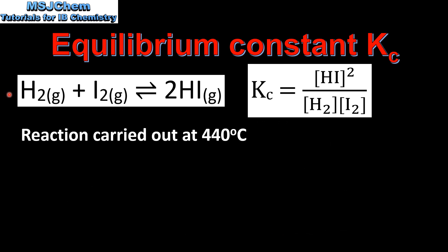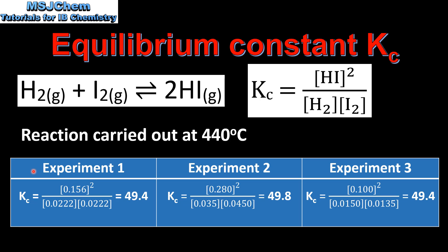Finally we will calculate the equilibrium constant Kc for this reaction at a specific temperature. In this table we have data from 3 experiments for the above reaction, carried out at 440 degrees C. I have substituted the equilibrium concentrations of the products in the numerator and the reactants in the denominator. As you can see, the value for the equilibrium constant is almost the same for each experiment. So for this reaction carried out at 440 degrees C, the value of the equilibrium constant is around 49.4.